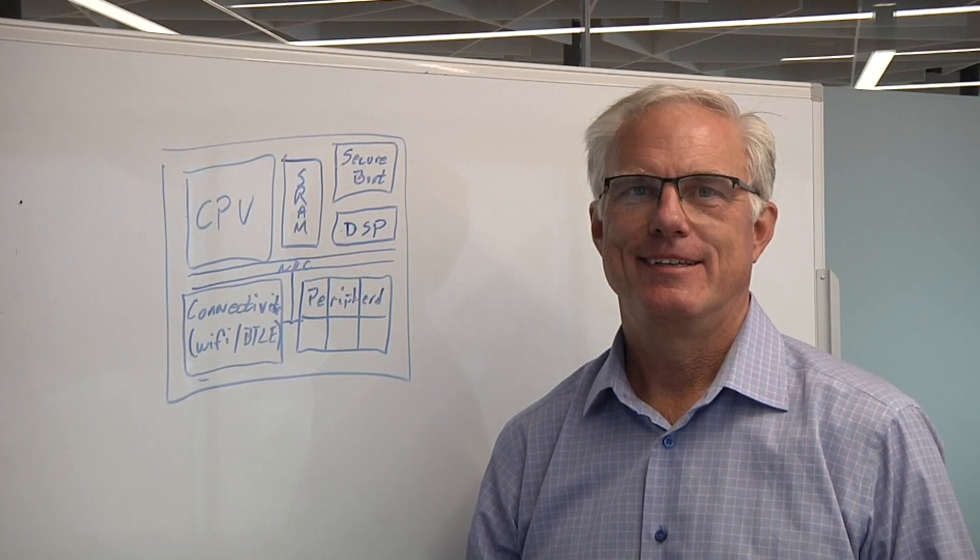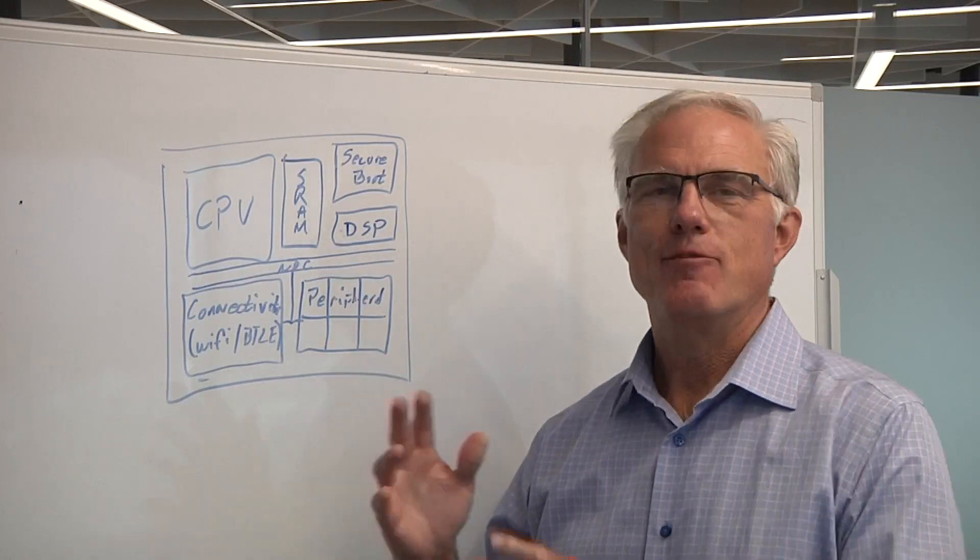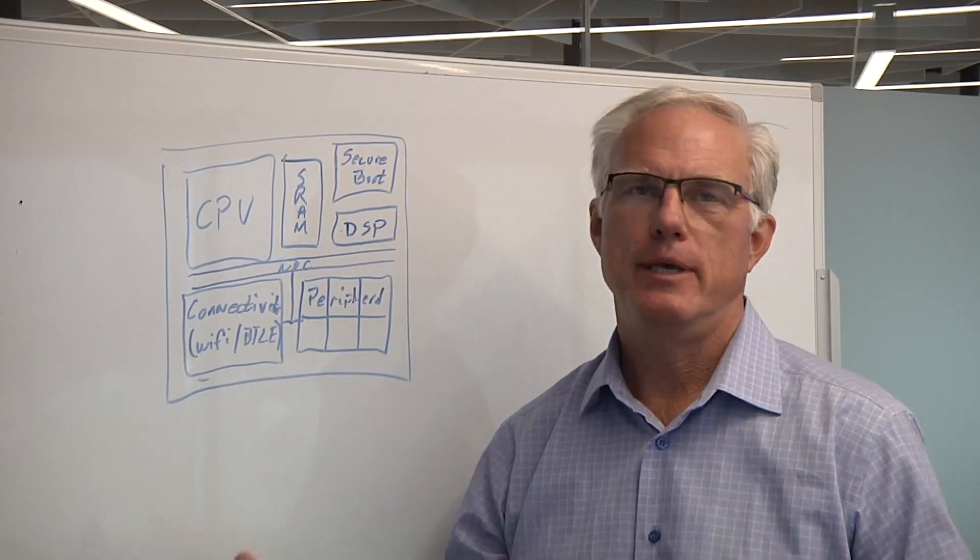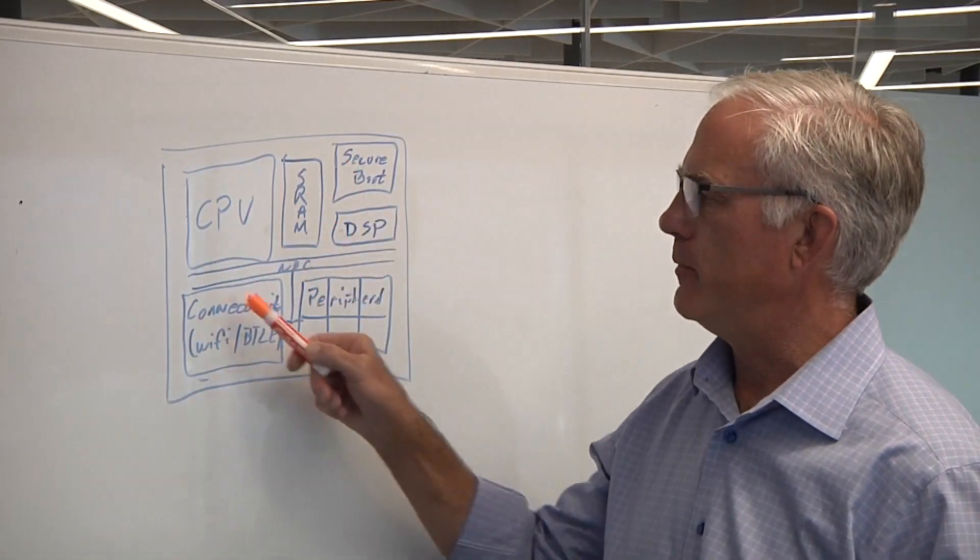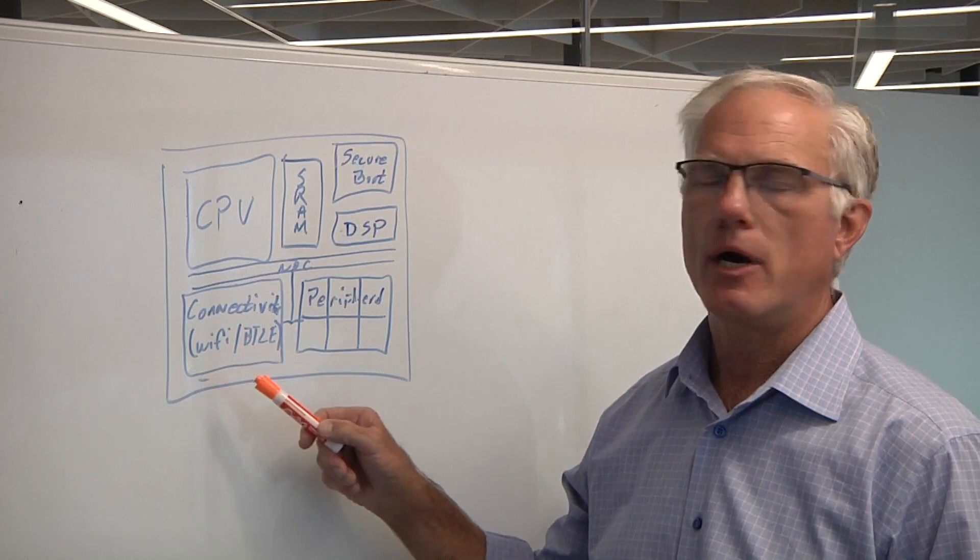Let's take a closer look. Andy, what are we looking at? So here is my rough drawing of a general SOC. It's got your processor subsystem here, a bunch of SRAM, some kind of connectivity block.